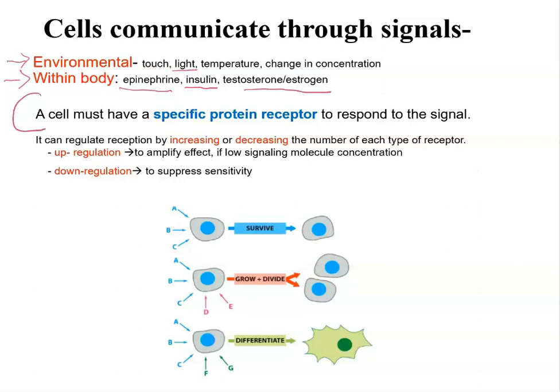What we want to understand is that a cell has to have a specific protein receptor in order to respond to a signal, because your cells are bathed by many different signals all around them. But not all cells are going to respond to all the signals at all times — so there has to be specificity. A cell has to have a specific protein receptor in order to respond to that specific signal.